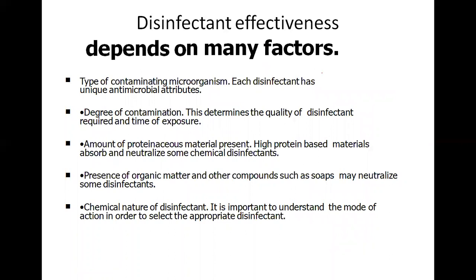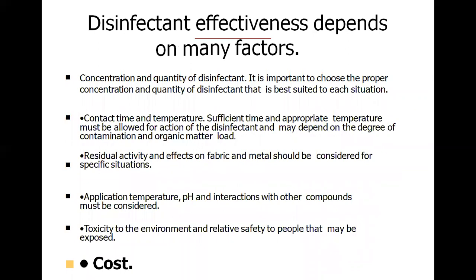Different factors affect disinfectant effectiveness. First, the type of contaminating microorganism matters, as each disinfectant has unique antimicrobial attributes. The degree of contamination determines whether a high, low, or intermediate level disinfectant is needed. High protein-based materials can neutralize chemical disinfectants, and the presence of organic matter affects potency. The chemical nature of the disinfectant used also affects the outcome.